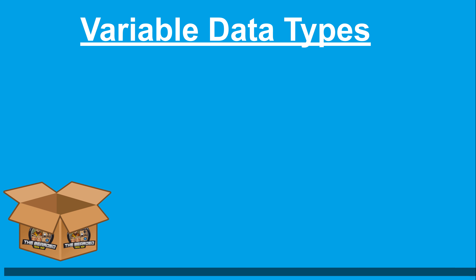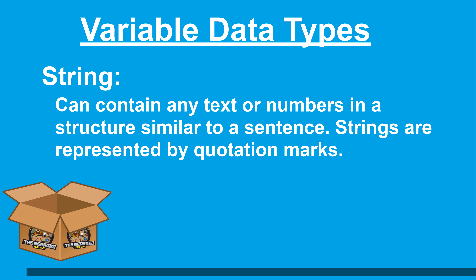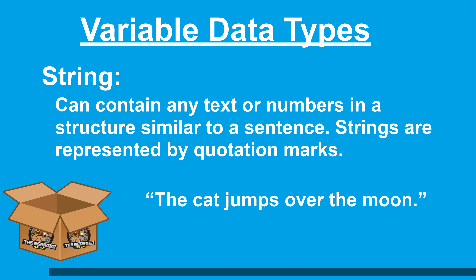There are actually nine different data types that can be assigned to a variable within WebCore. The first type is string. String variables can contain any text or numbers in a structure similar to a sentence, and strings are represented by quotation marks. An example of a string could be 'the cat jumps over the moon.' While a string can technically store just a number, it is not recommended as you may not get the results you were looking for when evaluating multiple string variables.